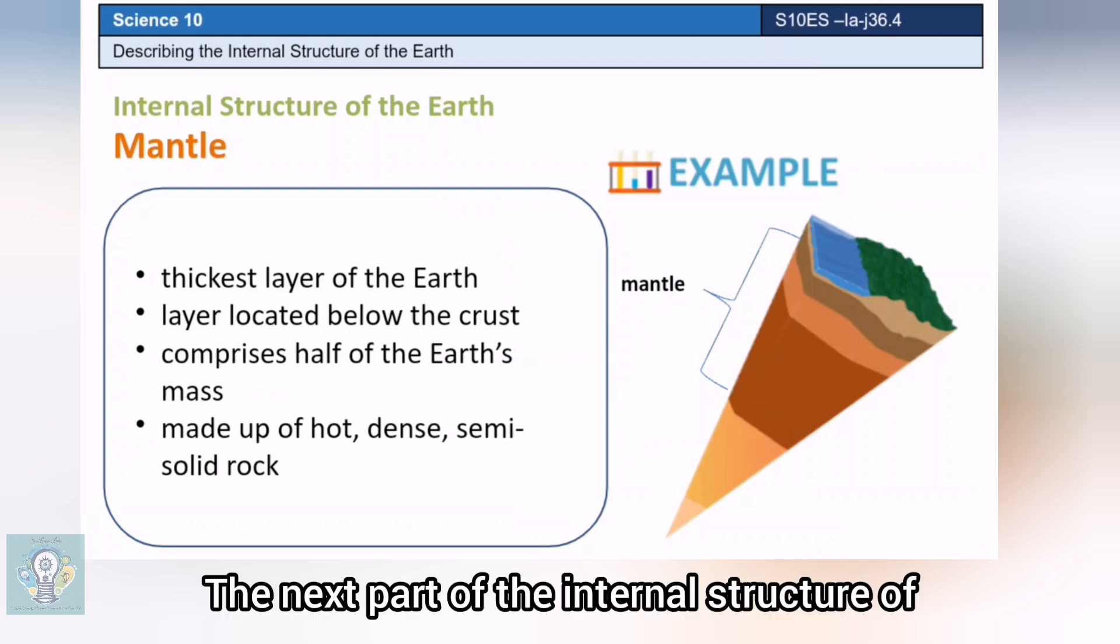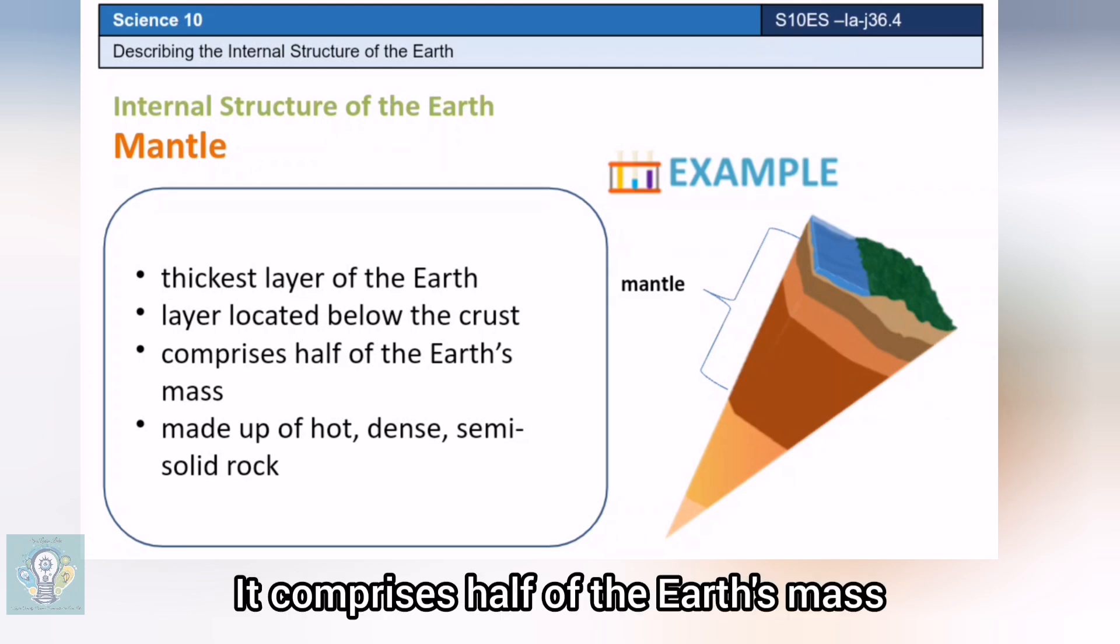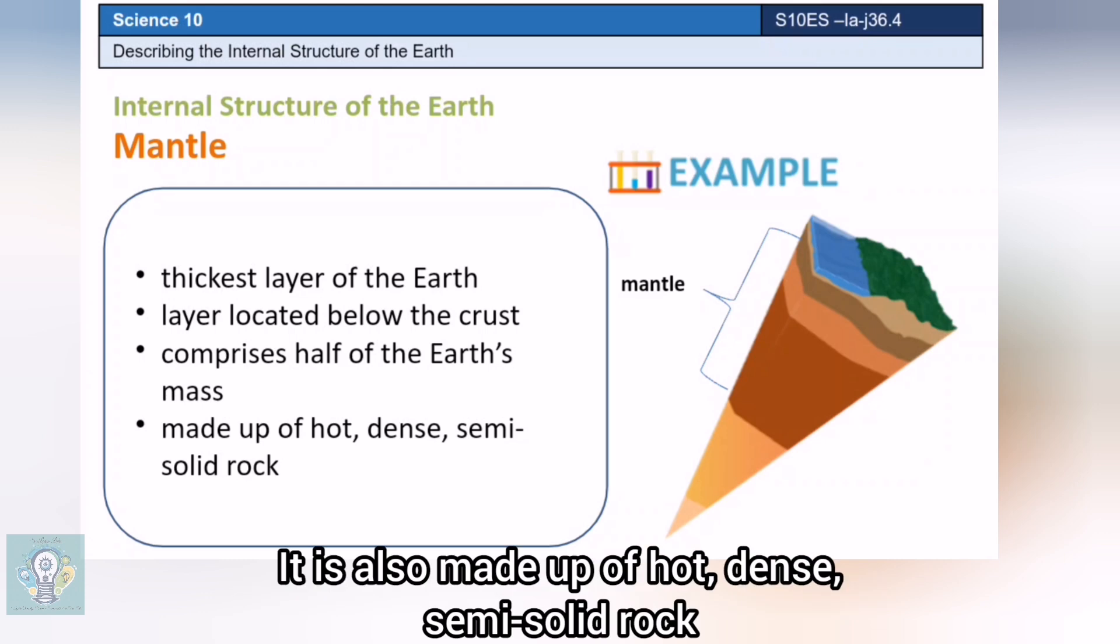The next part of the internal structure of the Earth is the mantle. It is the thickest layer of the Earth and is located below the crust. It comprises half of the Earth's mass and is made up of hot, dense, semi-solid rock.